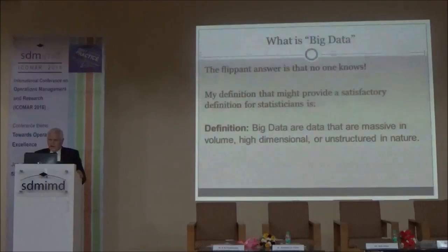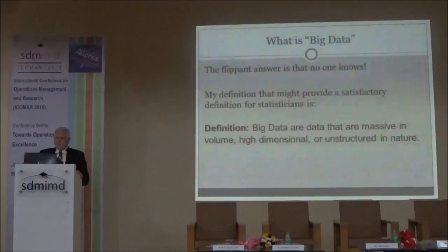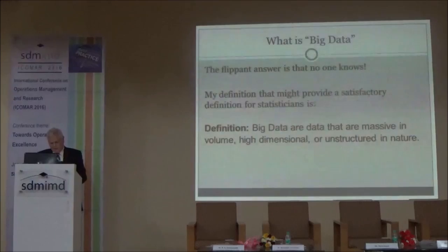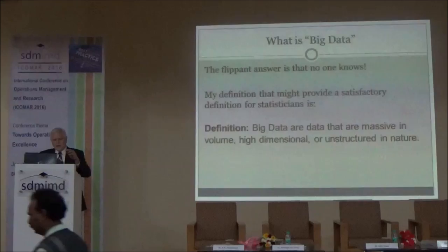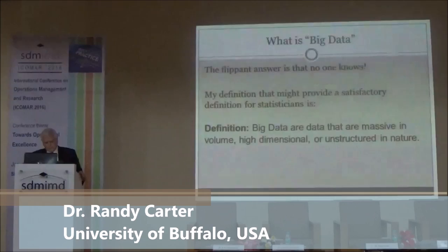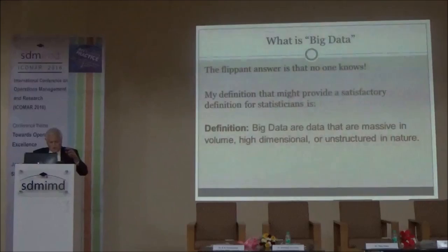As a statistician, I find that characterizing data according to the types of analyses that we might do on it is a more satisfying definition. I don't claim this is a general definition satisfying to everyone, but from a statistical point of view, it is helpful. And that is: the definition I propose is that big data are massive in volume, high-dimensional, or unstructured in nature.